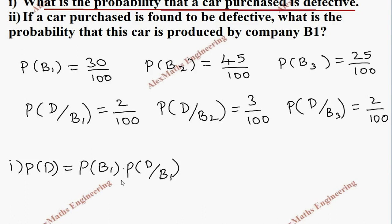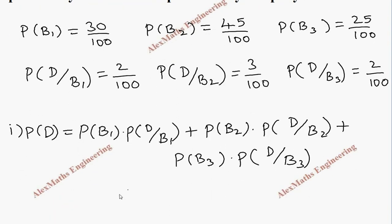That is, we take the probability of company B1 into getting a defective from B1, plus the probability of B2 and getting a defective from B2, and we have to write for the third also. P of B3 into P of defective from B3. This gives the total probability of the defective.